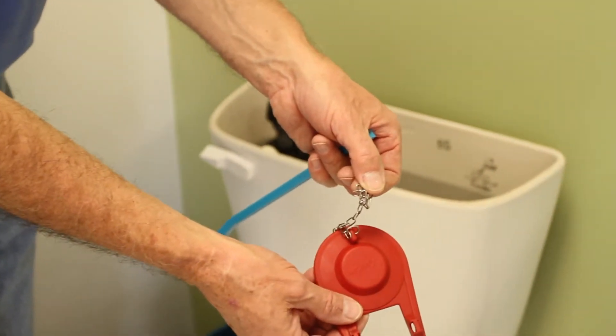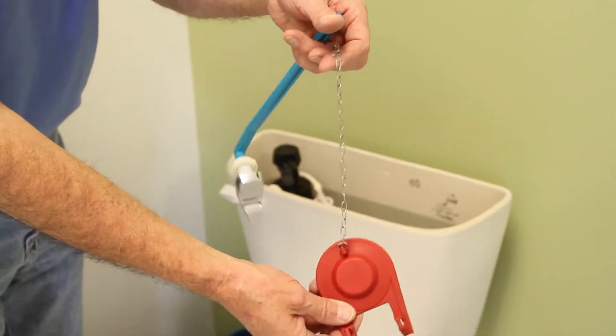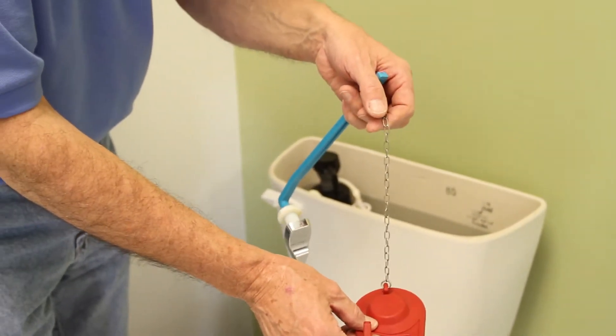You just need to take the top off and get the kink out of that chain. Make sure that the flapper falls down in the hole properly.